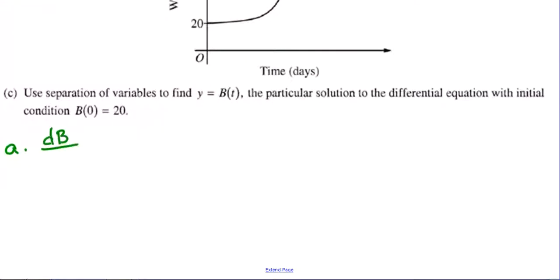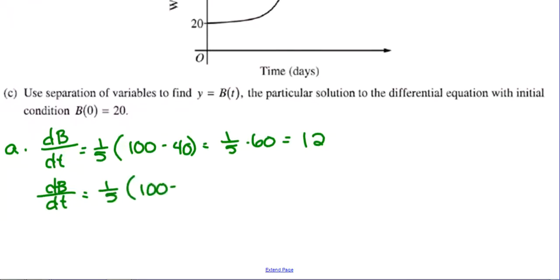Okay, so they even come out and mention the initial condition, B of zero equals 20. Let's look at part A. Is the bird gaining weight faster when it weighs 40 grams or when it weighs 70 grams? Well, they gave us an equation that talks about the rate, so it's asking about a rate. Faster is a rate. So the question is, is dB/dt greater at 40 or at 70? So it's just a matter of plugging it in.